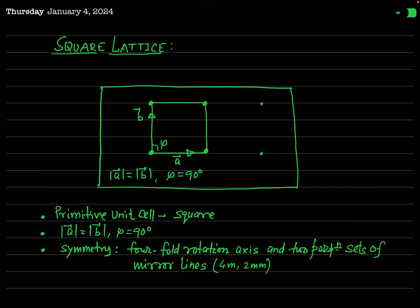The fourth Bravais lattice is the square lattice. As the name suggests, the primitive unit cell is a square. Its characteristic features are: mod A equals mod B, and angle phi equals 90 degrees. This lattice has a four-fold rotation axis and two perpendicular sets of mirror lines, symbolically denoted as 4M, 2MM.